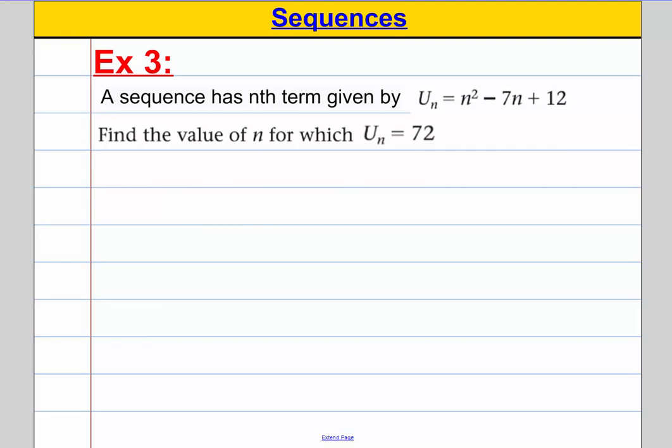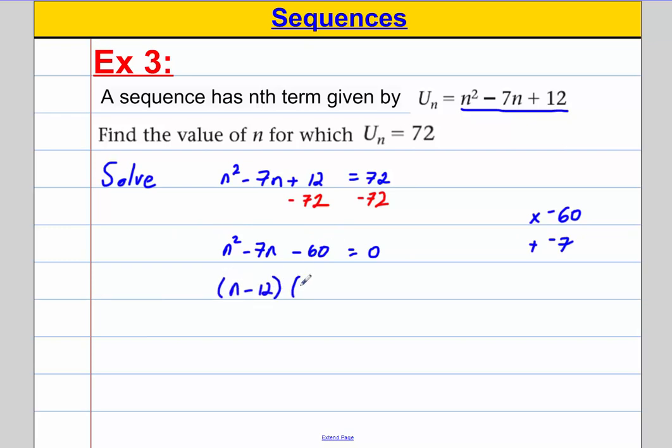Next example, example 3, exactly the same thing. We want to find the n such that the nth term is equal to 72, and here's our formula for the nth term. So, we're going to solve n squared subtract 7n add 12 is equal to 72. This is a quadratic which I can only solve if I have one side equal 0. So, I'm going to subtract 72 from both sides and I get n squared subtract 7n subtract 60 is equal to 0. And then I'm looking for two numbers that multiply to negative 60 and add to negative 7 because I'm going to factorize the quadratic. And I get n subtract 12, n plus 5 equals 0. So, on the one hand, n is 12. On the other hand, n is negative 5. But as before, I ignore the negatives and I have n is 12 is my answer.